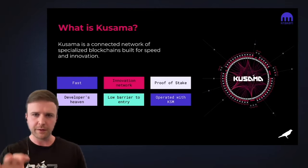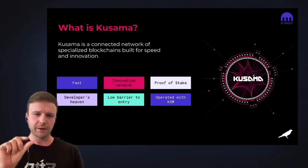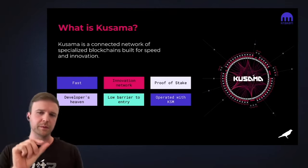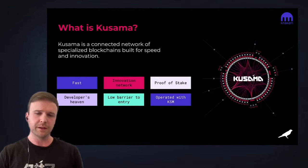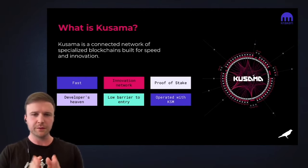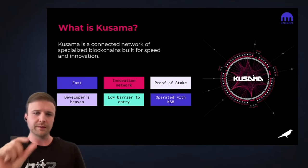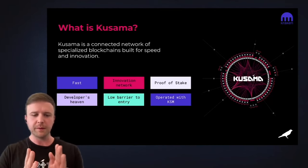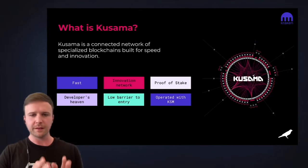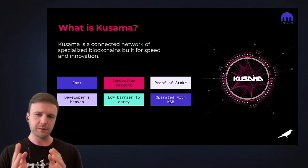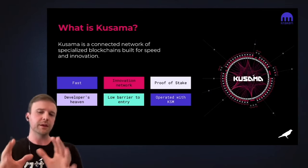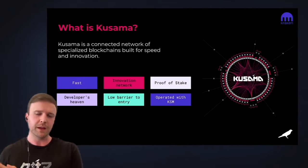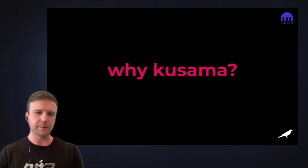All those little gray squares you see around this diagram are individual custom blockchains called parachains. In order to launch on the network, you have to win a slot in an auction. These auctions will most likely be significantly less of a cost burden to parachain teams on Kusama than in relation to Polkadot, and of course there are trade-offs to both.